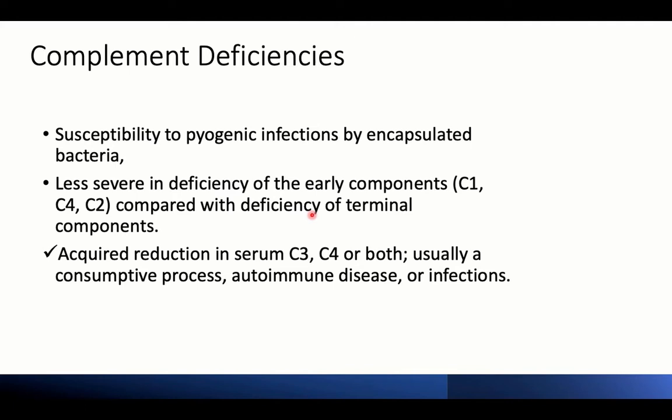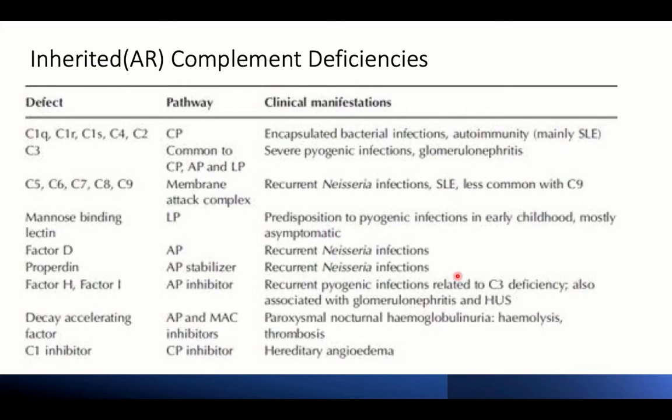Acquired reduction in serum C3 and C4, or both, can occur rather than inherited deficiency. For example, consumption of the complement system can occur in autoimmune disease like systemic lupus, or in infections, especially severe infections, where C3 can be consumed. So complement deficiencies can be both acquired and inherited.